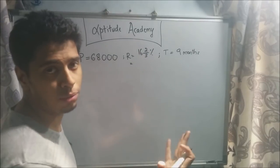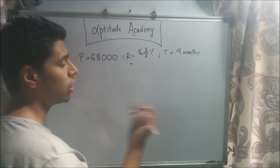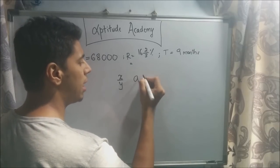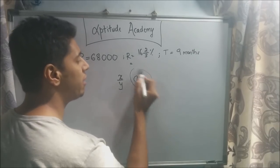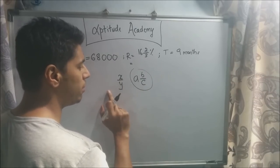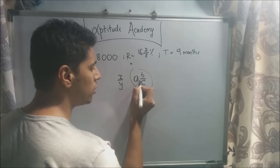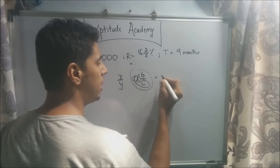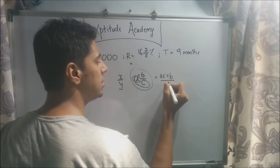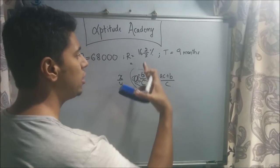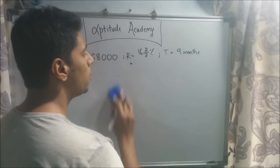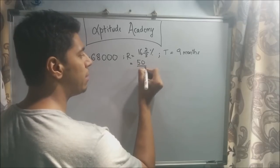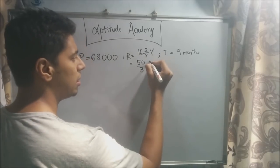The principal amount seems fine in rupees. The rate is a mixed fraction. A mixed fraction has the form A B/C, which equals (AC + B)/C. So for 16⅔, we multiply 16 into 3 to get 48, then add 2 to get 50, giving us 50/3 percent.